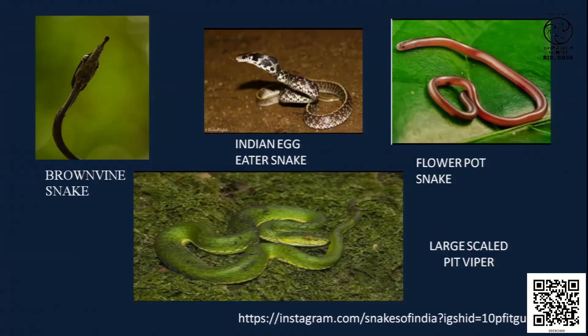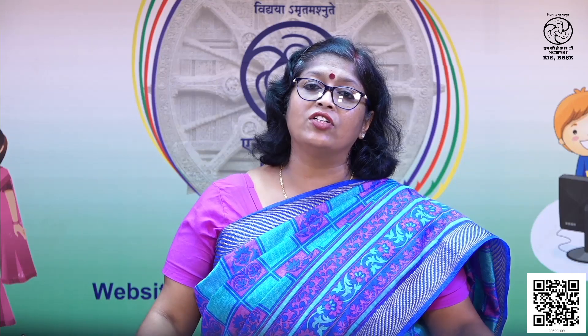Here you can see the names of different types of snakes — the Indian egg eater snake, the flower pot snake. You can see God's creation: they have a beautiful way of having camouflage. The large-scale pit viper, for example, when lying on a lawn, you cannot make out because the color matches so well. Some change color the way chameleons do. There are tree snakes that are completely green in color, and you can't make out whether it's a leaf, a stem, or a snake.